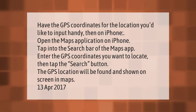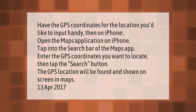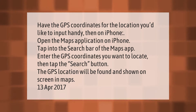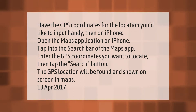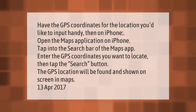Have the GPS coordinates for the location you'd like to input handy. On iPhone, open the Maps application, then tap into the search bar of the Maps app. Enter the GPS coordinates you want to locate, then tap the search button. The GPS location will be found and shown on screen in Maps.